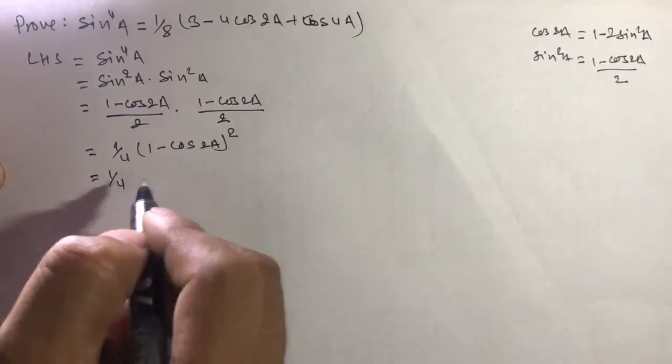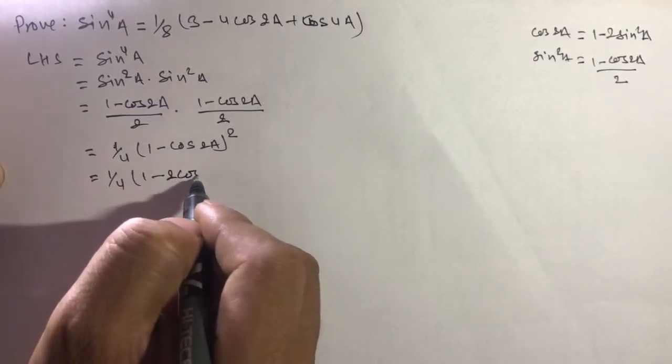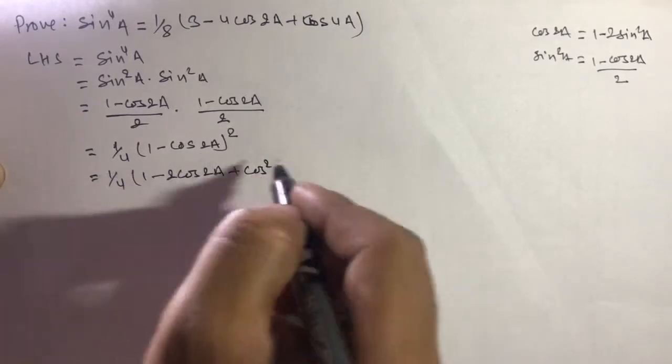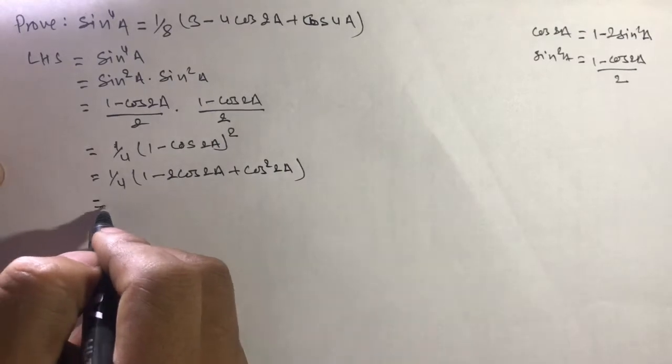Then 1/4 using the formula (a - b)²: we get 1 - 2cos 2a + cos²2a. Look here.